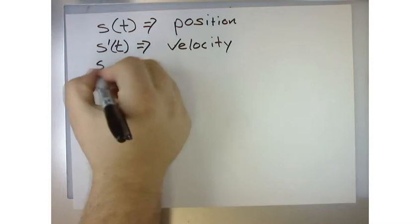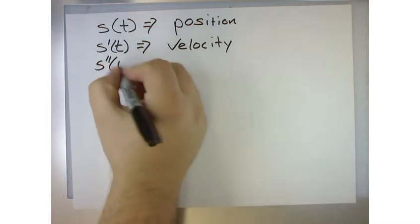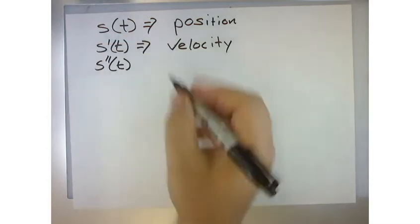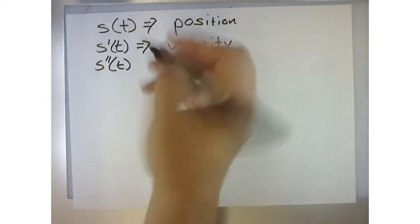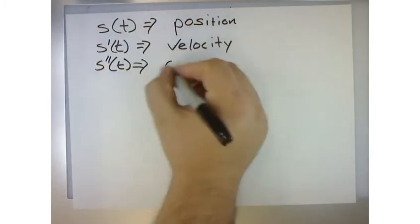So if I take the derivative of velocity, which is s double prime, which is the second order derivative of position, well, that gives me the acceleration.